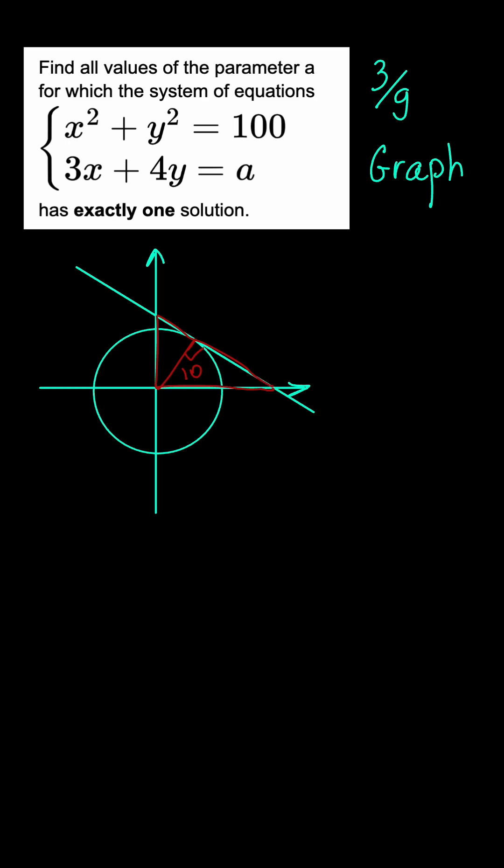To do this, we substitute y equals 0 into the equation of the line, which gives us 3x equals a or x equals a over 3. So this leg of the triangle is a over 3. Similarly, the other leg of the triangle is a over 4.